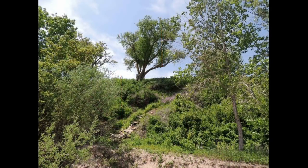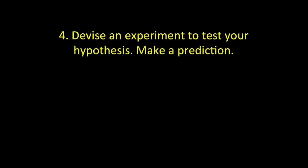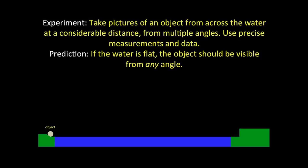Here's a picture of part of the cliff — it's about 48 feet top to bottom. So I've made some observations, gathered some information, and now it's time to make a guess. My hypothesis is that, since I can see a whole 8-mile stretch of lake that looks flat, my guess is that it's flat. The next step is to set up an experiment to test my hypothesis and make a prediction: I'll take pictures of an object on one shore from the opposite shore from multiple angles, and compare using precise measurements and data.